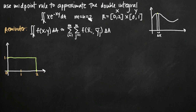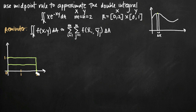m and n are not always equal to each other. m tells you how many rectangles to fit into the x interval, and n tells you how many to fit into the y interval. In this case both are 2, so we divide evenly: the height is 1, so we split at one half lengthwise, and the width is 2, so we split at 1. We now have two rectangles across by two rectangles tall.